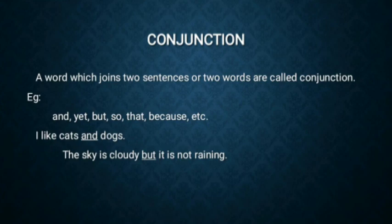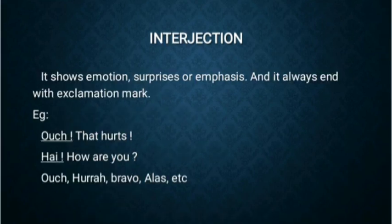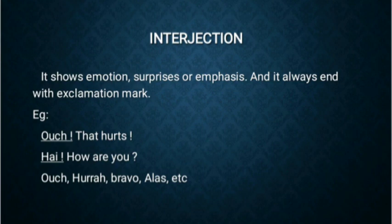Then comes the last part of speech, which is interjection. Interjection shows emotion, surprise, or emphasis, and it always ends with an exclamation mark. For example, 'Ouch, that hurts!' — ouch is an interjection which shows a sudden emotion of getting hurt. Another example: 'Hi, how are you?' — hi shows a sudden surprise or emotion which comes out of seeing someone after a long gap, so it is an interjection. Some commonly used interjections are ouch, hooray, bravo, alas, and so on.